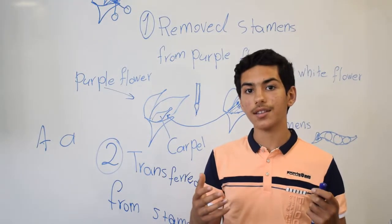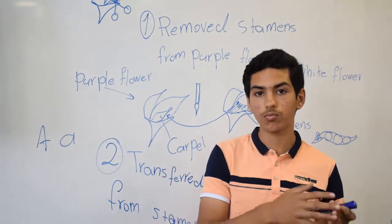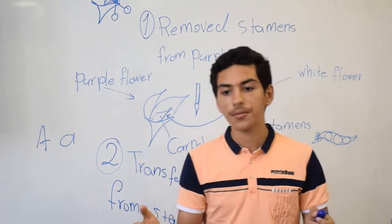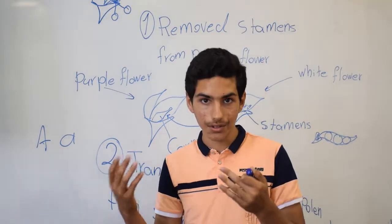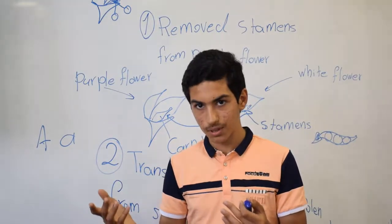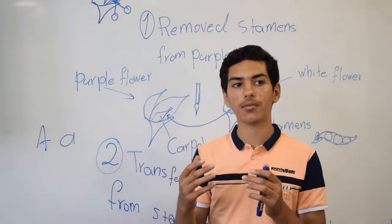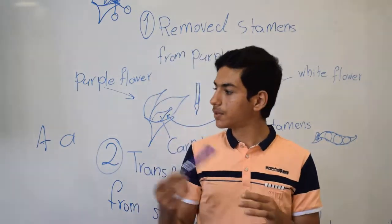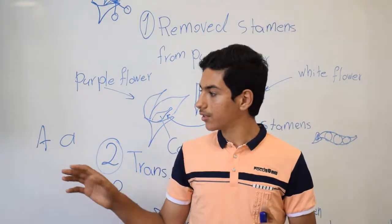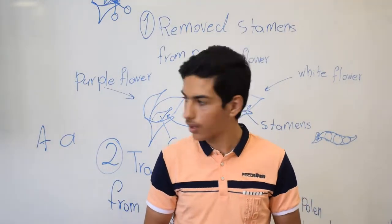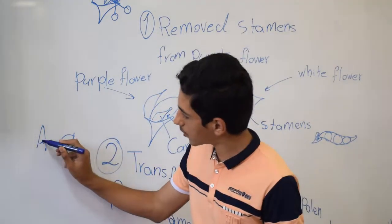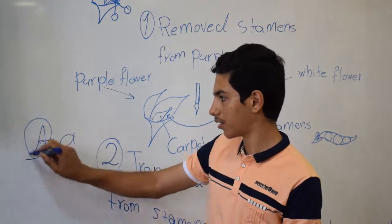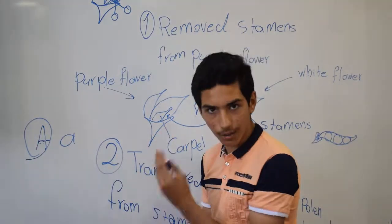The recessive allele is different from the dominant allele and has a few problems. The pea plant that has the dominant allele does not have any problem, because the dominant allele does not cause any problem.